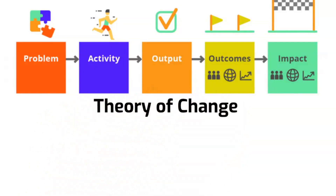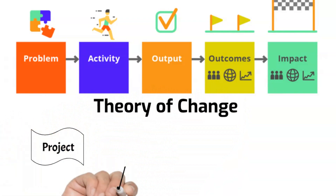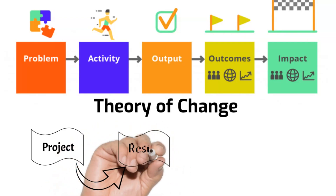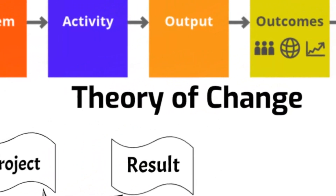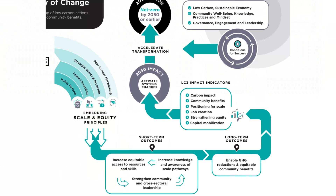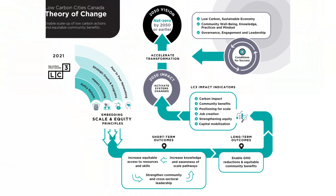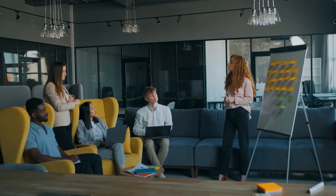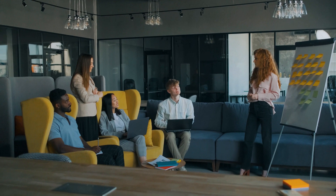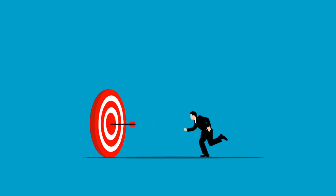Theory of change is a theory of how change is expected to take place with the type of intervention or the project that we plan to implement. It is a powerful tool that can be used to create a roadmap from start to the end results of any project. Theory of change is usually shown as a diagram or flow chart with all the possible narratives of change. We use it to design effective programs that are tailored to address specific issues, and it allows us to map out the steps needed to achieve our goals, making the path to success more transparent.